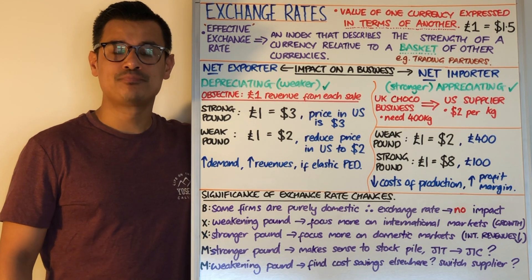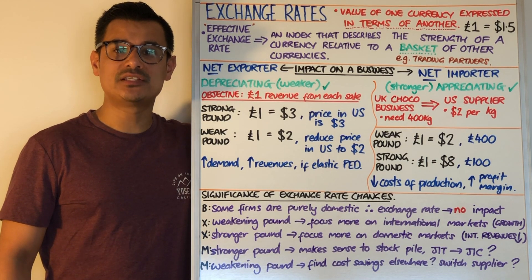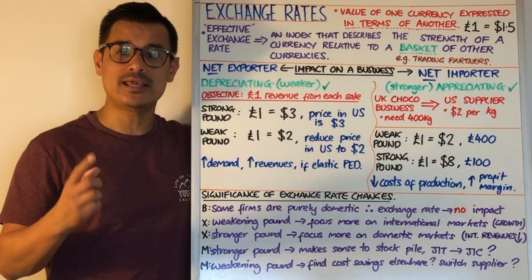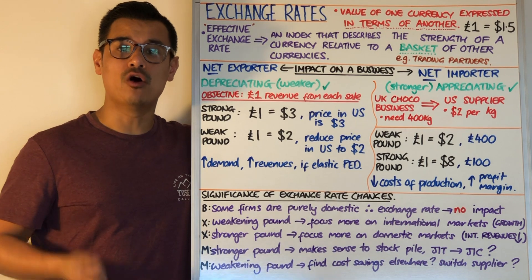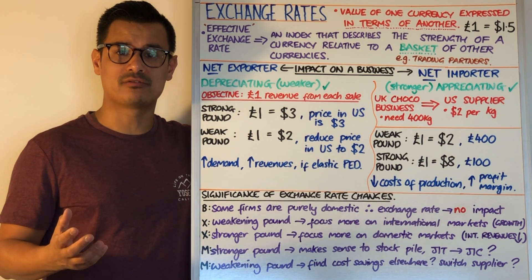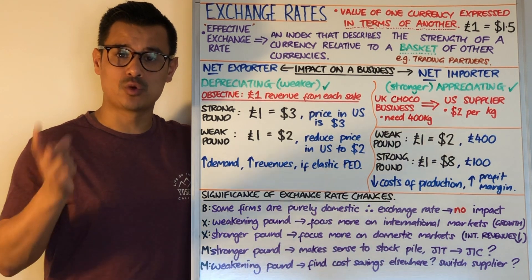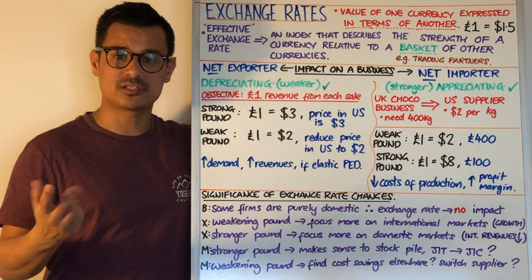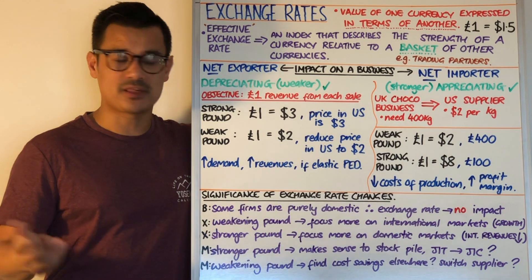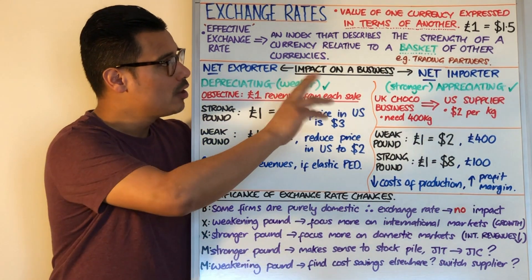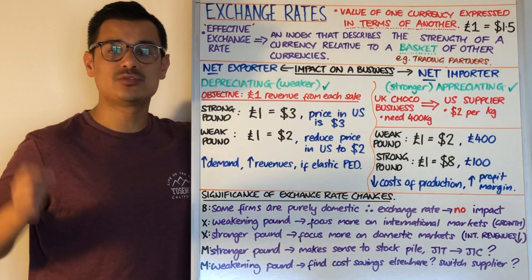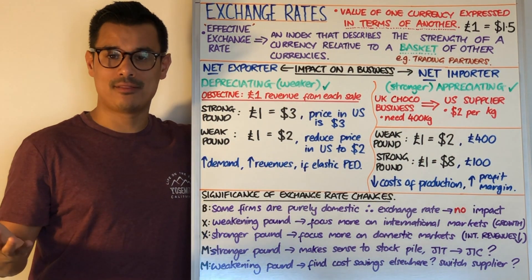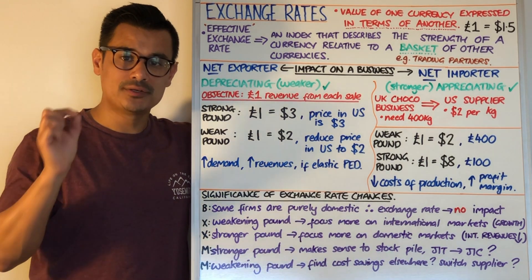Let's have a session on exchange rates. Exchange rates is the value of one currency in terms of another currency — so you're swapping one currency for another. An example of that could be one pound is worth one point five dollars. That could be an exchange rate.